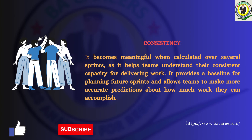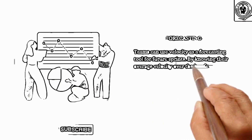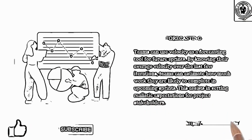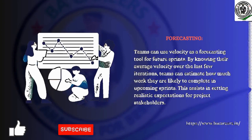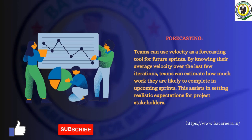Forecasting: Teams can use Velocity as a forecasting tool for future sprints. By knowing their average velocity over the last few iterations, teams can estimate how much work they are likely to complete in upcoming sprints. This assists in setting realistic expectations for project stakeholders.